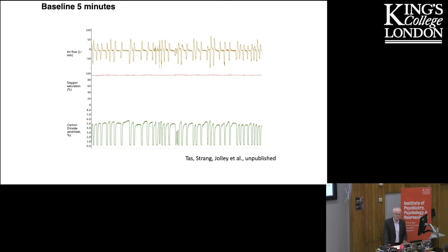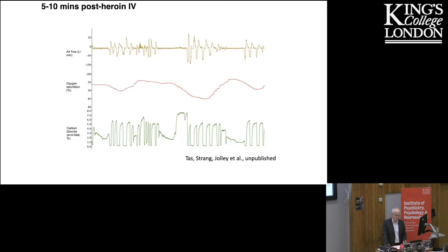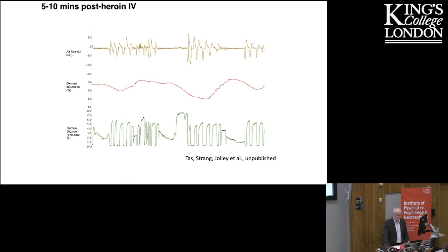Now let's look at what happens 5 to 10 minutes after heroin injection. We can see remarkable disturbance to this breathing pattern with long apneic episodes — episodes lasting up to 56 seconds with this individual. The rising CO2 levels are not triggering the breathing that one would expect to see, and there's a consequent drop in oxygen levels down to the upper 80s. Even an hour later we're seeing much the same picture.